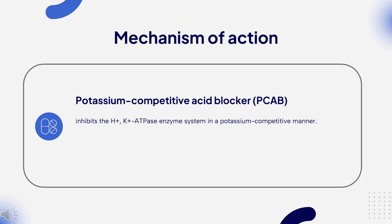Mechanism of Action: Bonoprazin is a potassium-competitive acid blocker (PCAB) that inhibits the H+/K+-ATPase enzyme system in a potassium-competitive manner. Through this mechanism, Bonoprazin suppresses basal and stimulated gastric acid secretion at the secretory surface of gastric parietal cells. Although both classes of drugs inhibit the H+/K+-ATPase, the mechanism of action of PCABs differs from that of proton pump inhibitors (PPIs). PPIs form a covalent disulfide bond with a cysteine residue on the H+/K+-ATPase, leading to inactivation of the enzyme, while PCABs interfere with the binding of K+ to the H+/K+-ATPase.